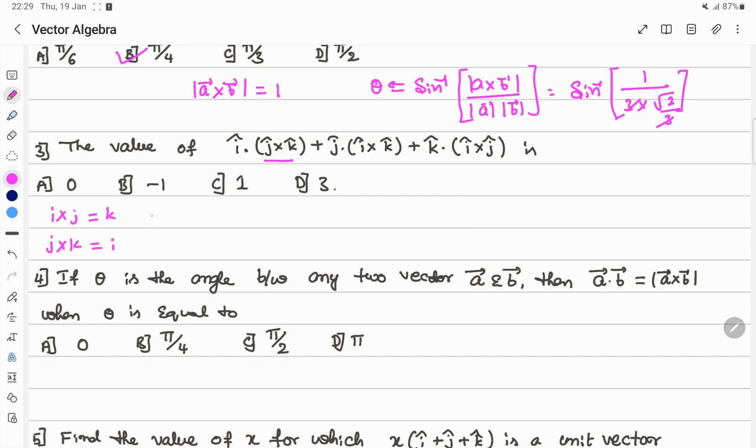j cross k value is i. Apply the cross product rules: i cross j equals k, i cross k equals minus j.